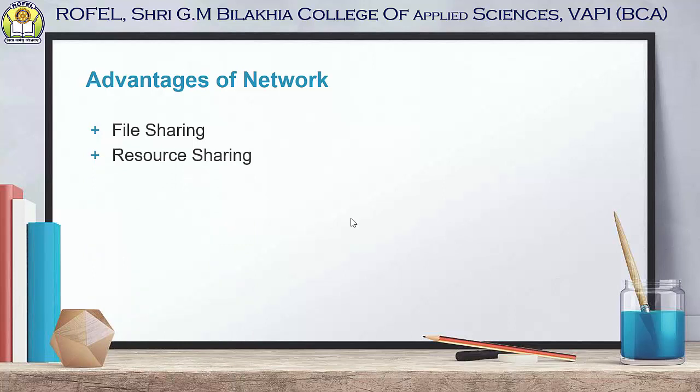The second advantage is resource sharing. A file is also one type of resource, but here resource sharing means hardware resource sharing. All computers in the network can share resources like printers, scanners, fax machines, modems, etc. For example, if there are ten PCs in a network and all want to print, they don't each need their own printer — all ten PCs can print from one shared printer, reducing cost.